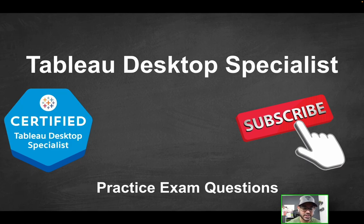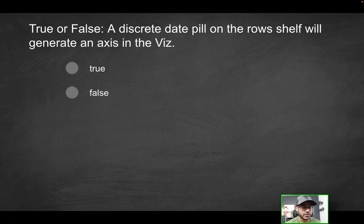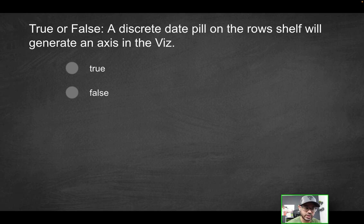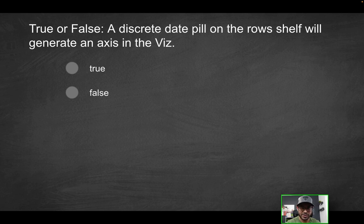Welcome to part six of the Tableau Desktop Specialist Practice Exam Series. Our first question is going to be true or false: a discrete date pill on the row shelf will generate an axis in the visualization. This is definitely one of those topics you really want to focus on — blue pill versus green pill, discrete versus continuous — as far as the Tableau Desktop Specialist Exam is concerned.